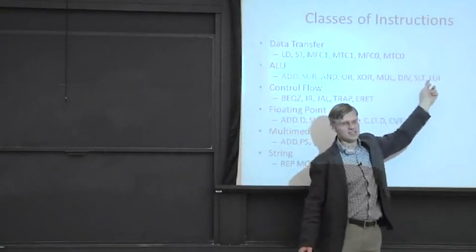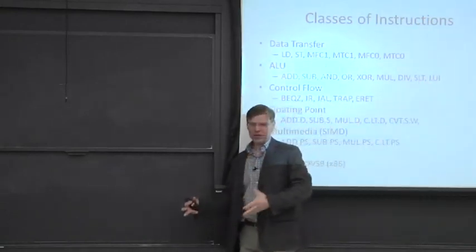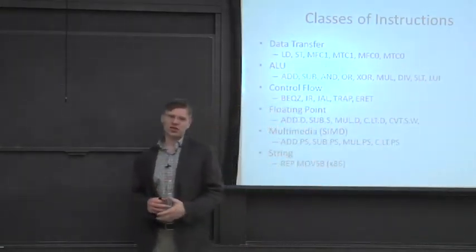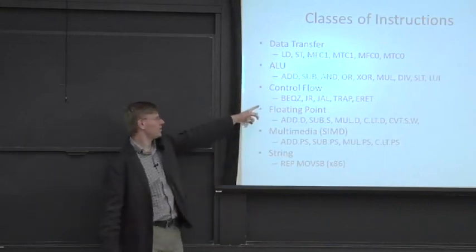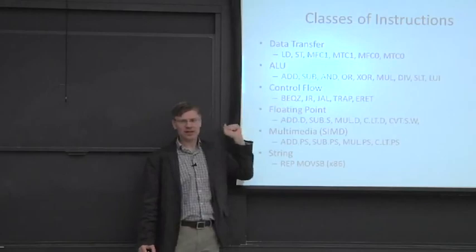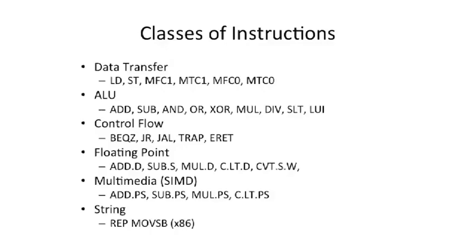Load upper immediate moves a value into a different register location, kind of like a shift operation. You can have control flow instructions — branches, jumps, traps. One of the points I want to get across here is that within or between different instruction set architectures, people make different choices about which instructions to have. Some architectures have very complex ones, and some have very simple ones.